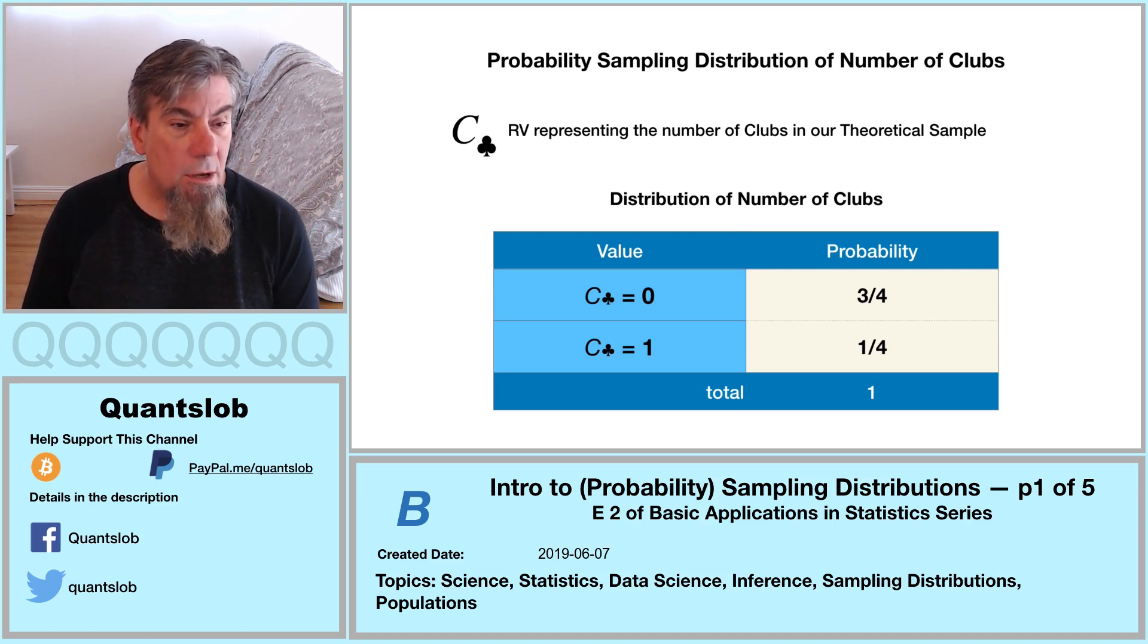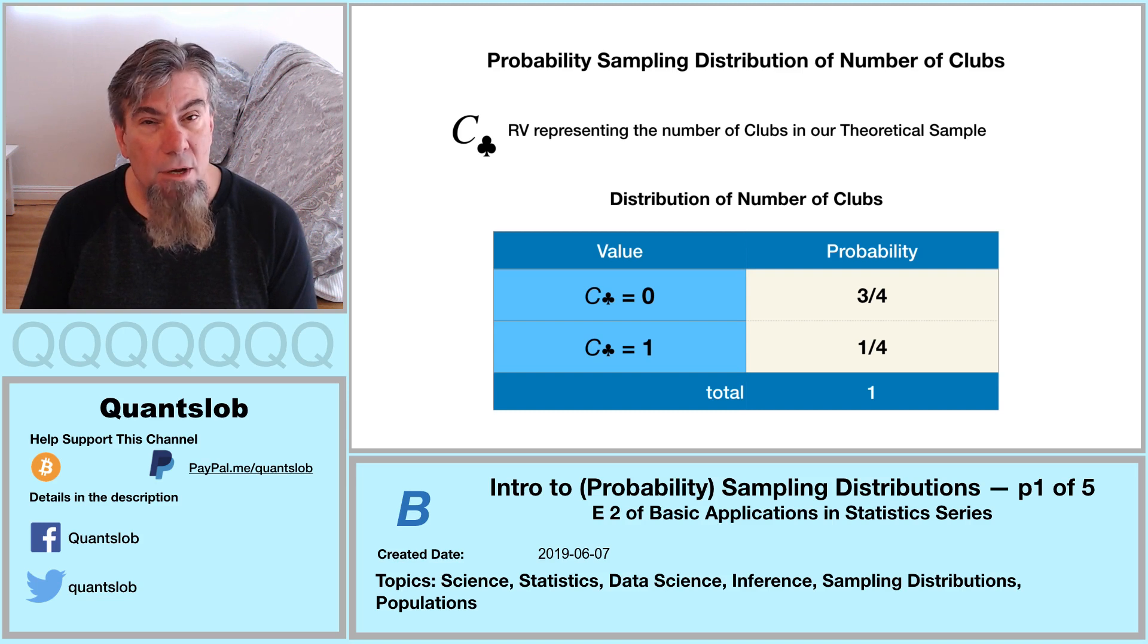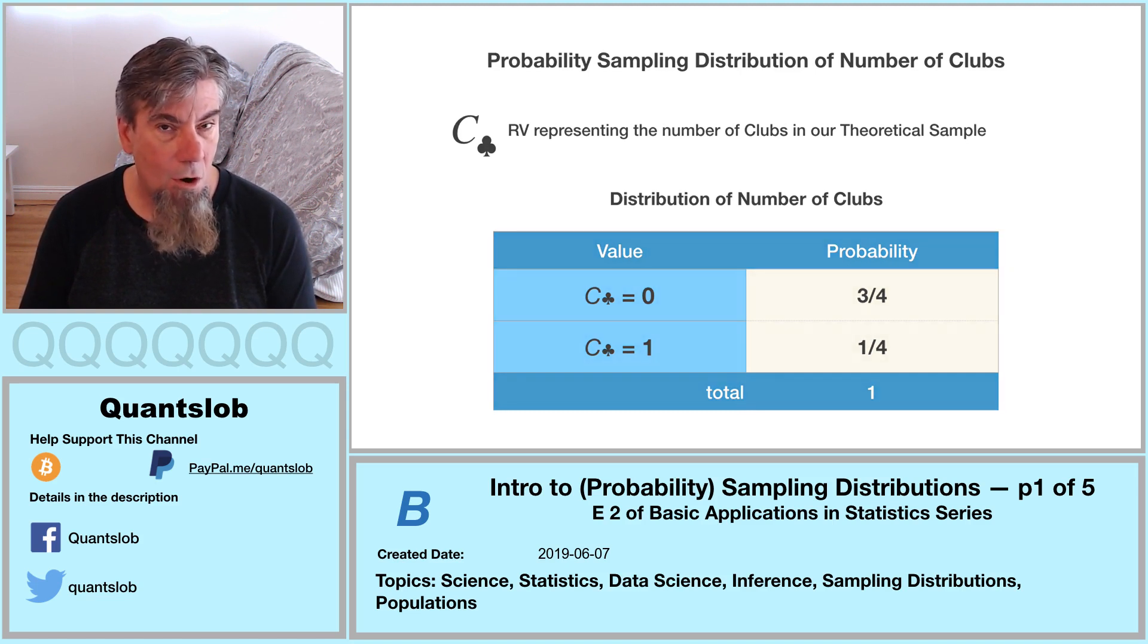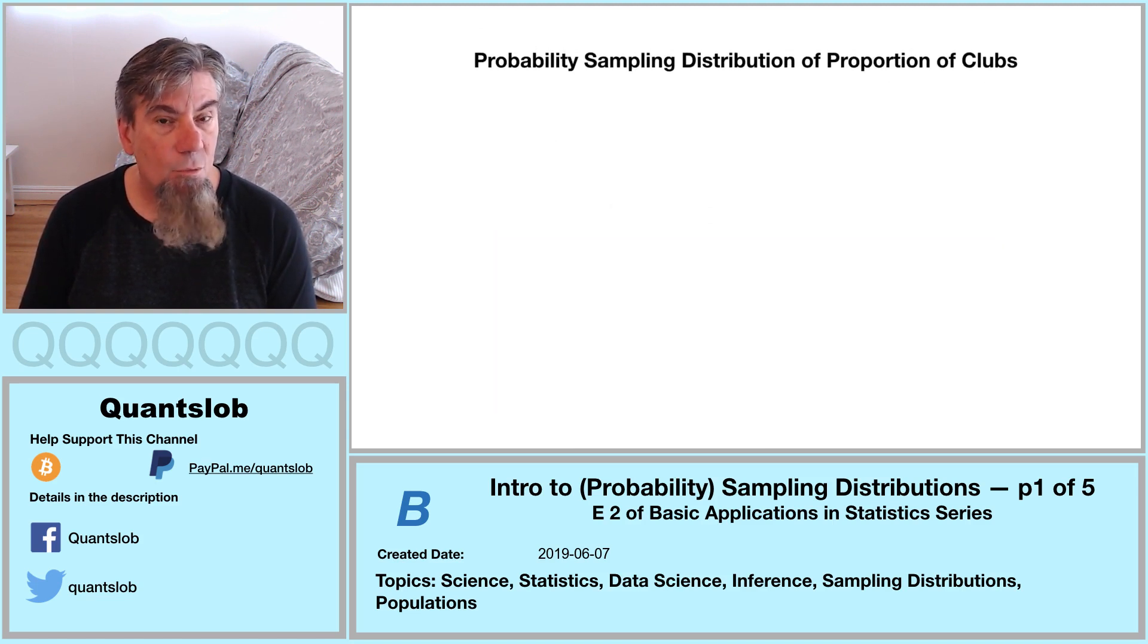So what we're showing here is the probability sampling distribution of our sample statistic number of clubs in our theoretical sample of size one. In other words, the probability that one card in our sample of one is clubs is one fourth. The probability that none or zero of the one card is clubs is three fourths.